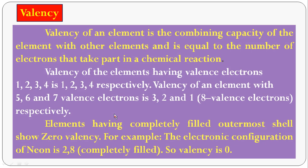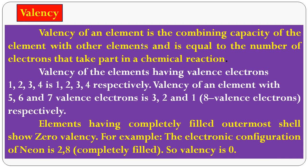What is called valence? Valence of an element is the combining capacity of an element with other elements, and it is equal to the number of electrons that take part in a chemical reaction. For example, in H₂O, hydrogen has valence 1 and oxygen has valence 2. So elements having valence electrons 1, 2, 3, or 4 have valence 1, 2, 3, or 4 respectively.